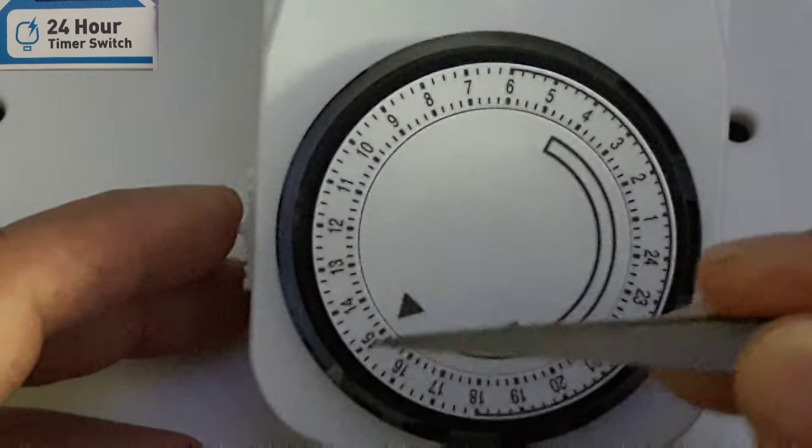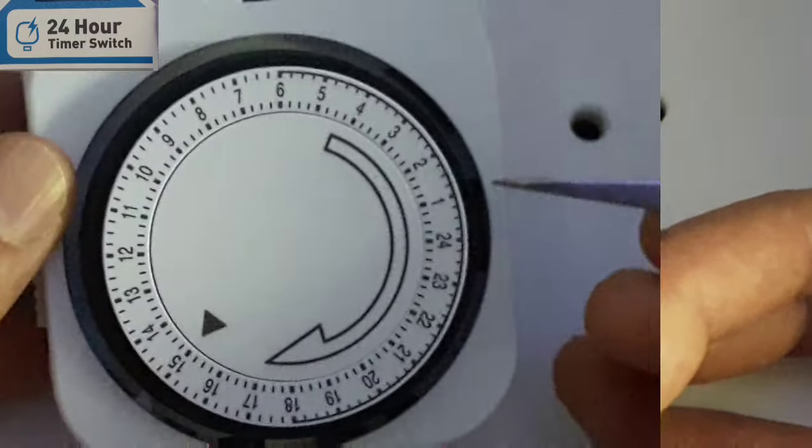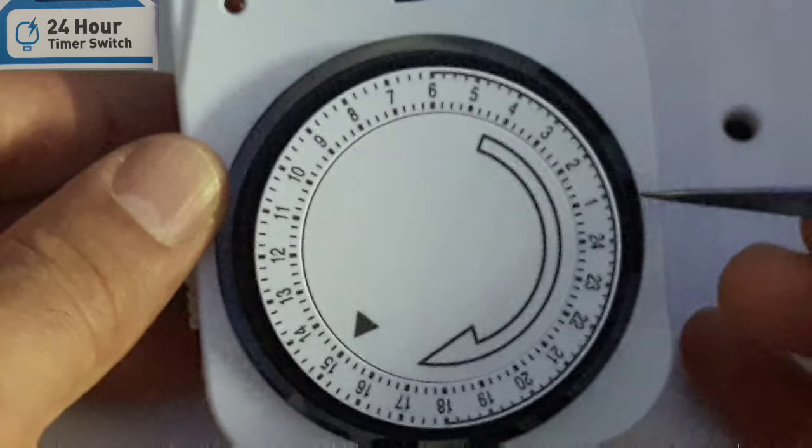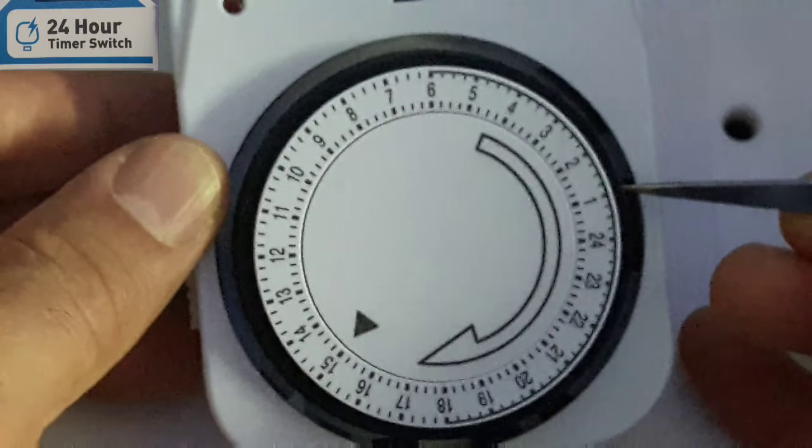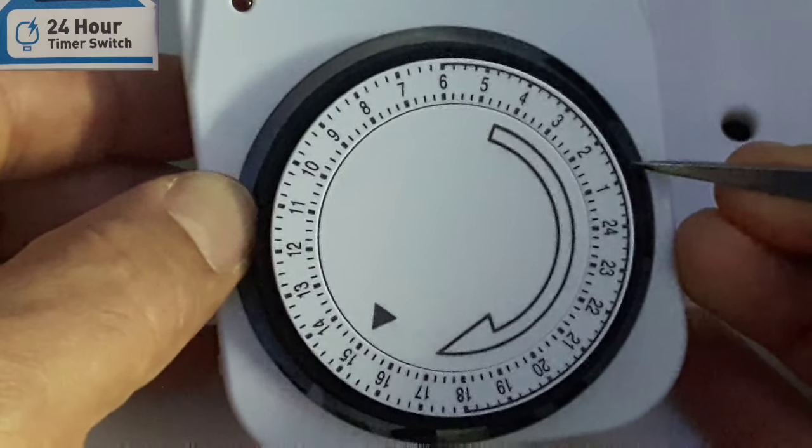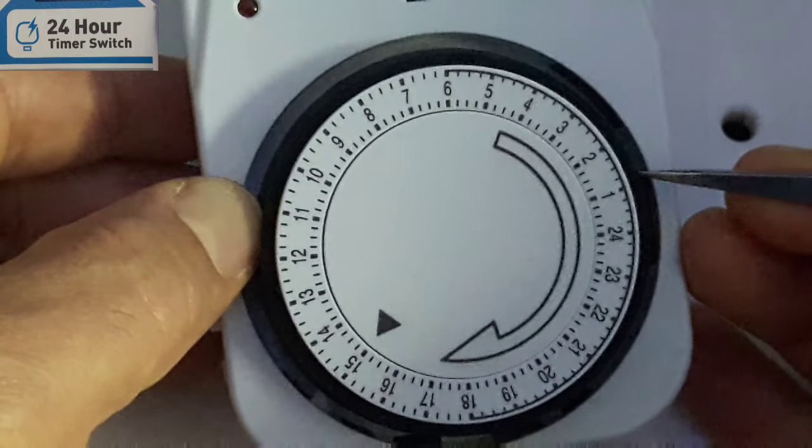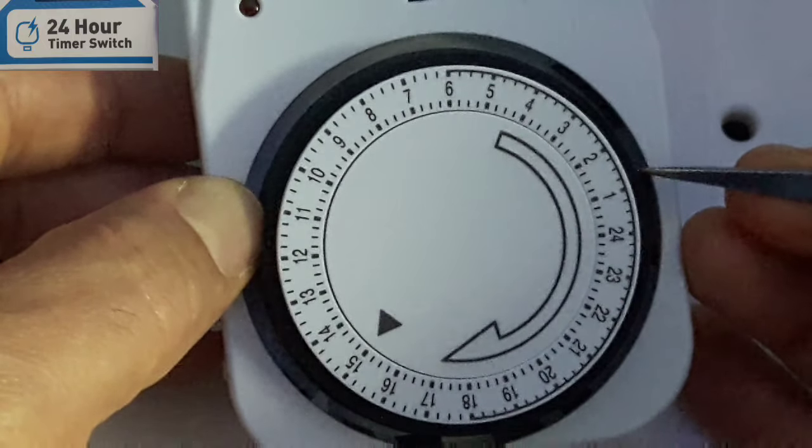This black circle has segments, and you've got your arrow which indicates the time now. Each segment is 15 minutes, so you can pull it up or push it down.